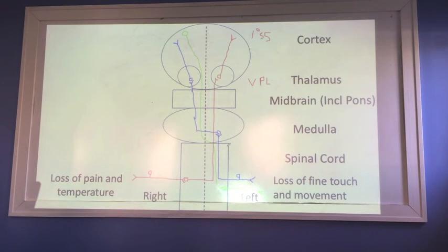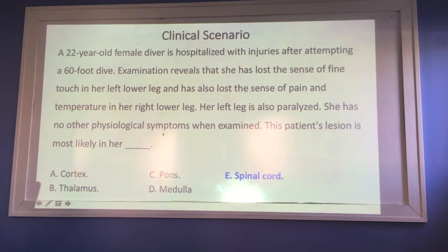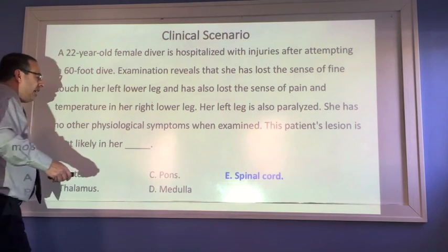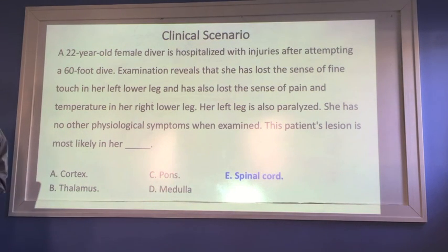So if we look very closely, what we're looking for is the place of overlap of all three pathways, and that's very obviously occurring in the spinal cord here. So if we now look at the clinical, the answer to this would be in the spinal cord, based on our pathways.